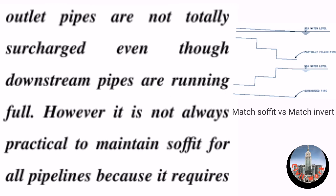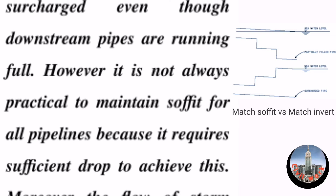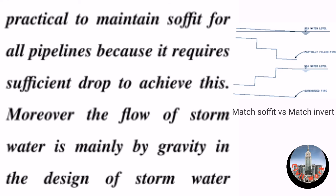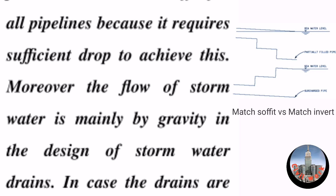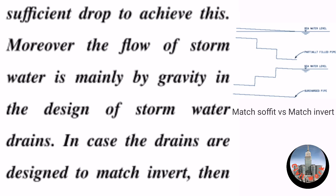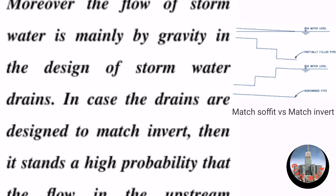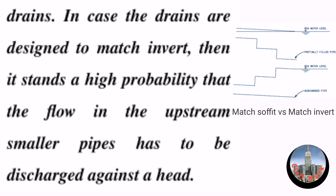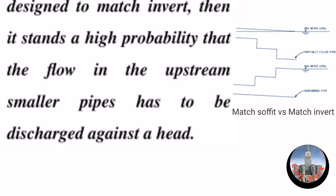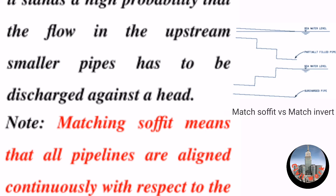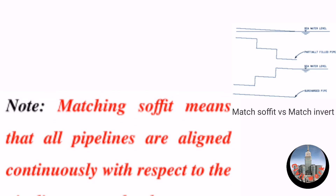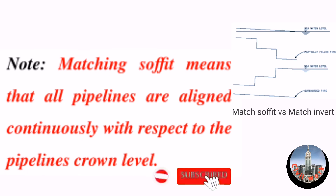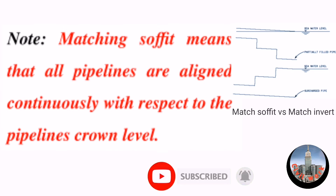However, it is not always practical to maintain soffit for all pipelines because it requires sufficient drop to achieve this. Moreover, the flow of stormwater is mainly by gravity. In the design of stormwater drains, if the drains are designed to match invert, then there is a high probability that the flow in the upstream smaller pipes has to be discharged against a head. Matching soffit means that all pipelines are aligned continuously with respect to the pipelines' crown level.